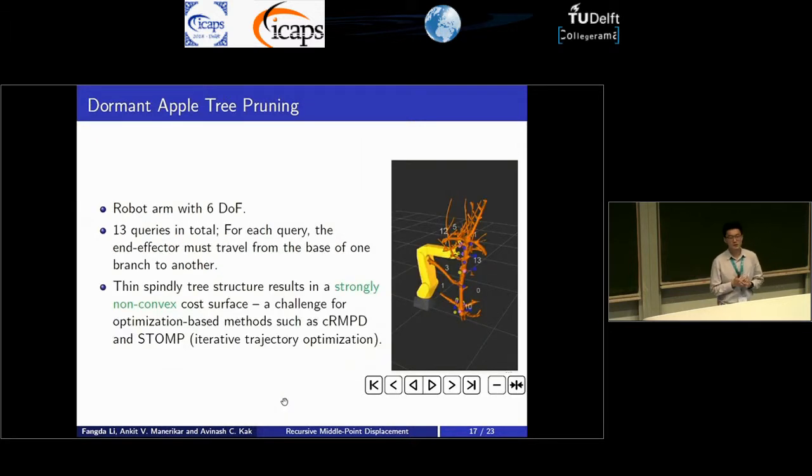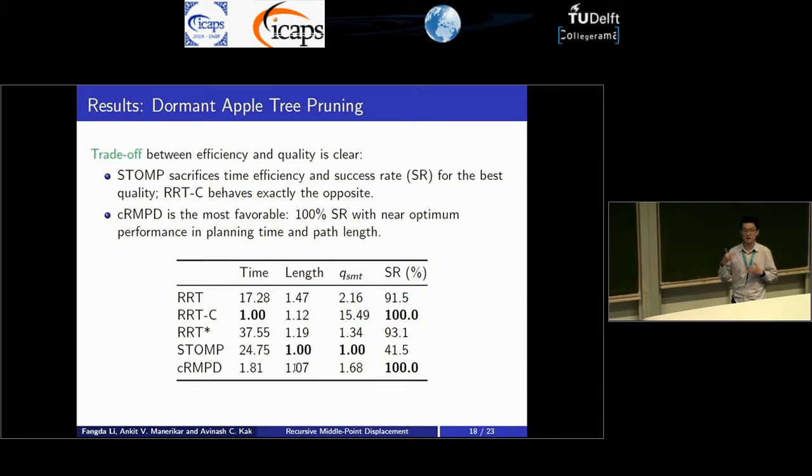The final benchmark is a very interesting benchmark. On the right you see a sample path planned by our planner. The benchmark consists of a 6 degree of freedom robotic arm. There are 13 queries in total in this benchmark where in each query the end effector of this robot arm is tasked to move from the base of one branch to another as suggested by the pink marker on the tree. The interesting thing to see here is that this tree has a very spindly thin structure. Therefore it presents a challenge for optimization-based planners because it serves as a highly non-convex cost surface.